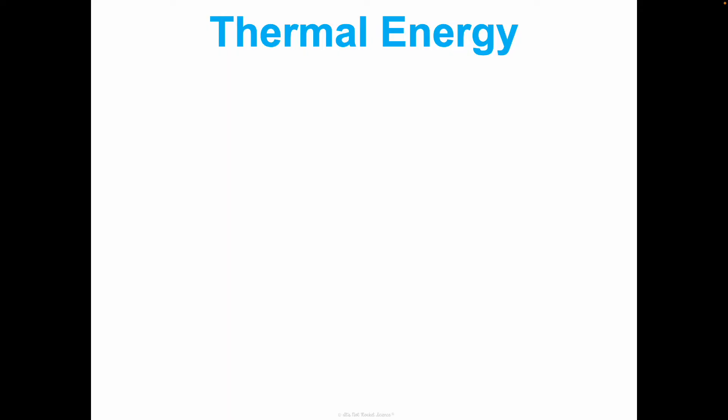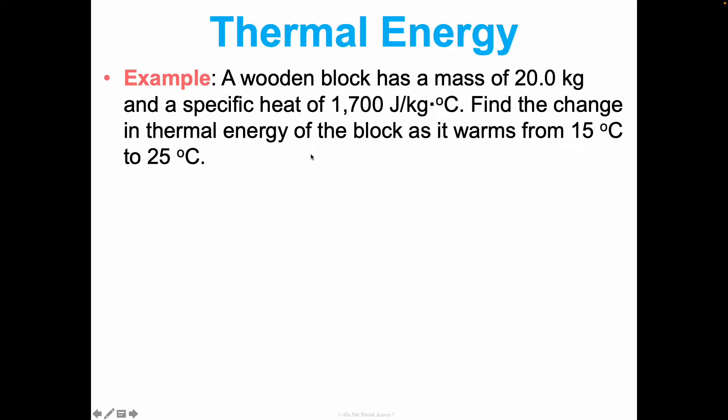Let's do an example, and let's watch the units so this will make a little bit more sense. A wooden block has a mass of 20.0 kilograms and a specific heat of 1,700 joules divided by kilograms times degrees Celsius. Find the change in thermal energy of the block as it warms from 15 degrees Celsius to 25 degrees Celsius. So what do we know? We know the mass is 20.0 kilograms. We know that the specific heat is 1,700 joules divided by kilograms times degrees Celsius. We know the initial temperature is 15 degrees Celsius, and the final is 25 degrees Celsius. What do we want to know? We want to know Q. Doing our little radar, let's diagnose what would be the right equation for this. It's going to be Q equals mcΔT. I'm looking for Q, and that's already on its own. We can rewrite it as this to make it a little easier, so you remember that's what delta T stands for.